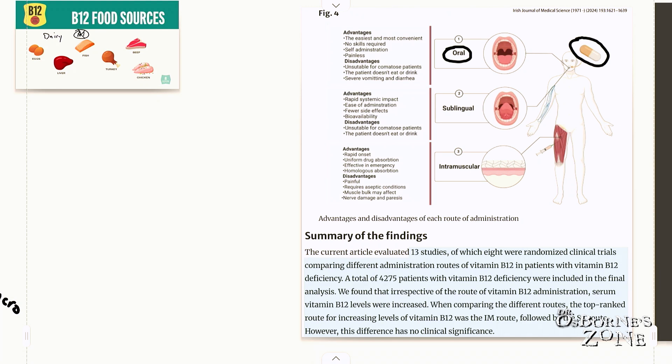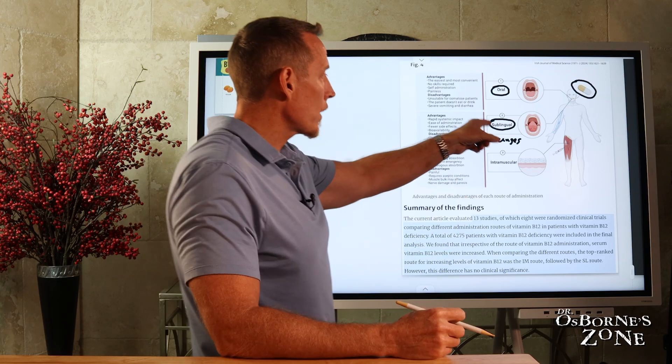The second way would be something called sublingual. Typically these are lozenges. These are little lozenges you put under your tongue and you suck on them like a piece of candy and they dissolve and the vitamin B12 absorbs into your bloodstream through your cheeks. So remember, we talked earlier about all the mechanisms, how you absorb vitamin B12, and it's predominantly a very specialized mechanism through your stomach and intestine, where you can bypass that whole thing with sublingual.